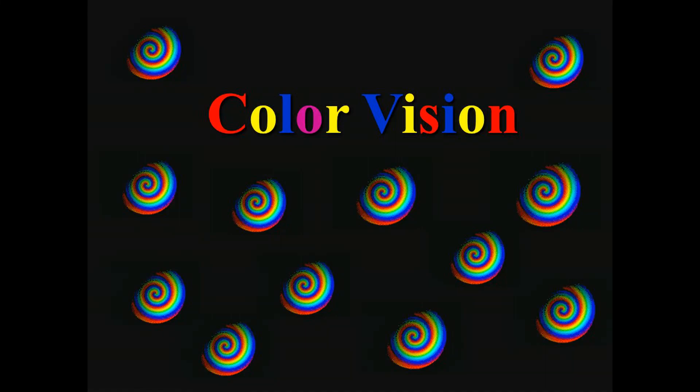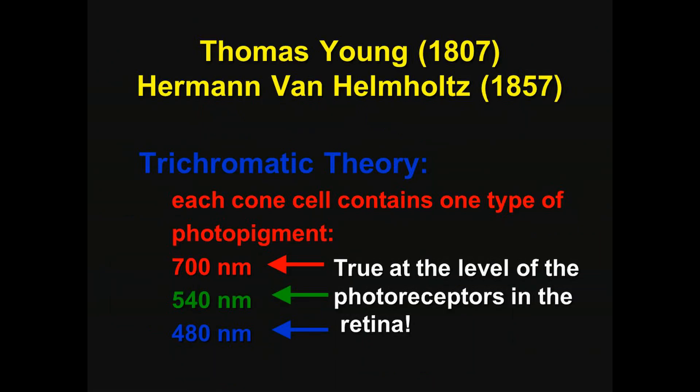An important part of understanding human vision is understanding how color vision works. Color vision was a hotly debated topic back in the 1800s as researchers were studying the human visual system. On one hand, you had Thomas Young and Hermann von Helmholtz, two highly respected scientists,